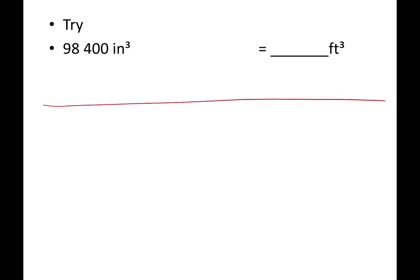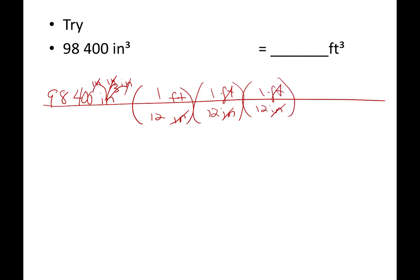Okay, here we go. 98,400 cubic inches. I'm going to replace this with my three little antenna: inches times inches times inches. I'm going to get rid of inches, go to feet. 12 inches in a foot. This is going to cancel one. I've got two more inches to dispose of. 12 inches in a foot. This cancels the next one. One more inch to get rid of. 12 inches in one foot. This cancels that one.